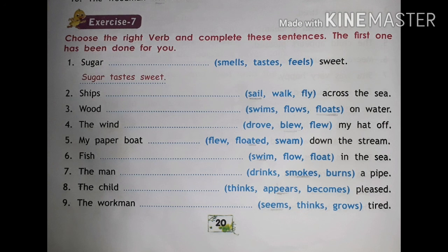Number nine: the workman — dash — tired. Options: seems, thinks, grows. The right answer is: seems — the workman seems tired. So now we have solved all the exercises given in this unit from exercise one to exercise seven. We also learned about the verb, transitive verb, and intransitive verb. Sometimes some verbs have both natures — transitive and intransitive — and we will learn this in our coming classes. Thank you.